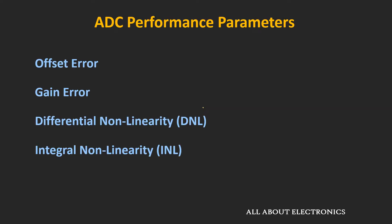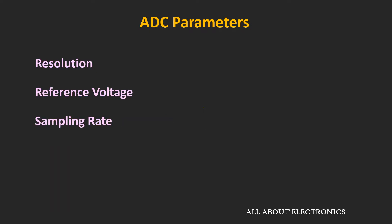In this video, we will discuss some of the performance parameters of the ADC. If you have followed the previous videos in this series, we discussed some basic parameters like resolution, reference voltage, and sampling rate, which give you a basic idea about the performance of the ADC. But for selecting the ADC for a particular application, these parameters are not enough.